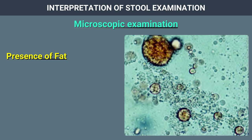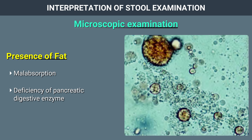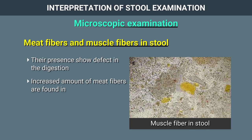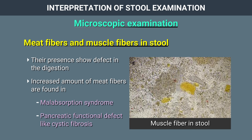Fat in stool shows the possibility of malabsorption, deficiency of pancreatic digestive enzymes, or deficiency of bile. Meat fibres and muscle fibres seen in stool show a defect in digestion, and increased amounts of meat fibres can be found in malabsorption syndrome and pancreatic functional defects like cystic fibrosis.